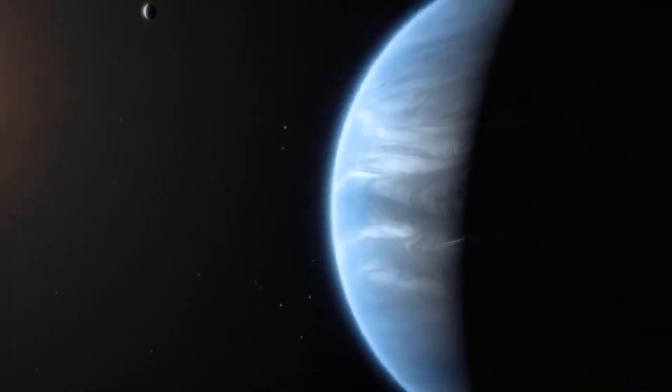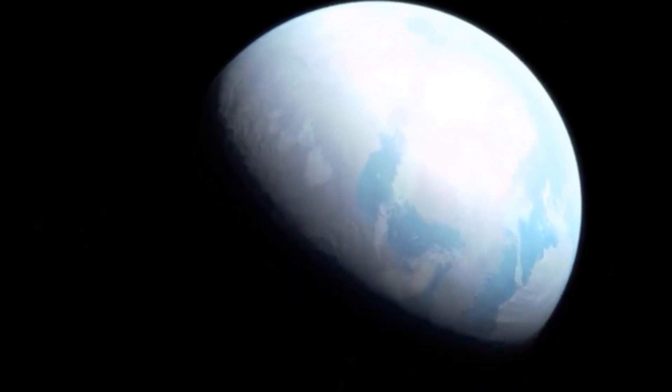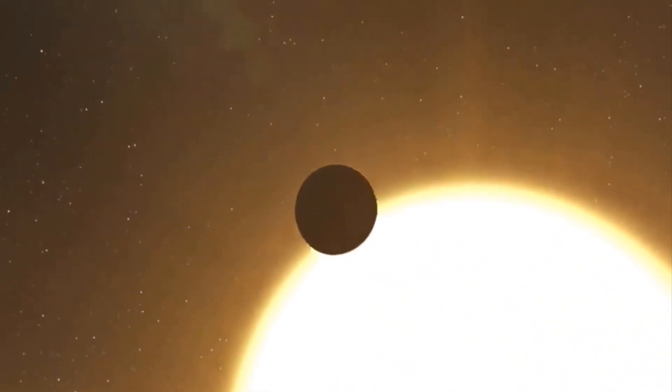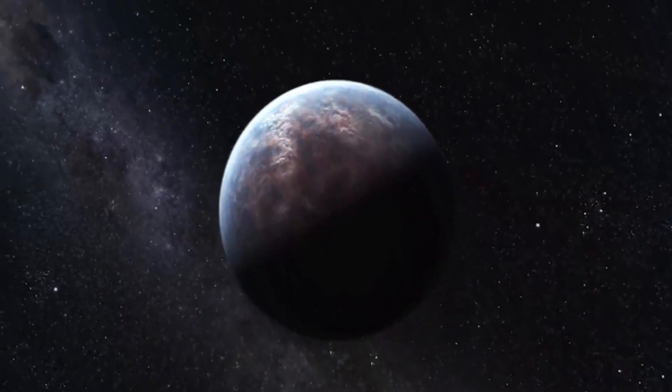Kepler-22b also orbits a G-star-class sun like our sun, but the exoplanet's star is a little bit smaller and colder. Investigators praised the find as helping to fulfill Kepler's mission of finding another Earth.